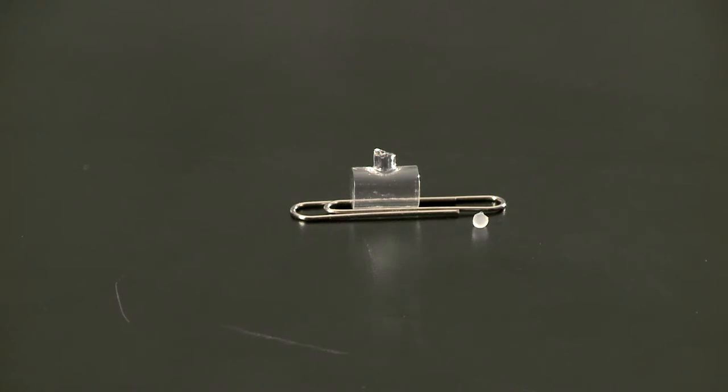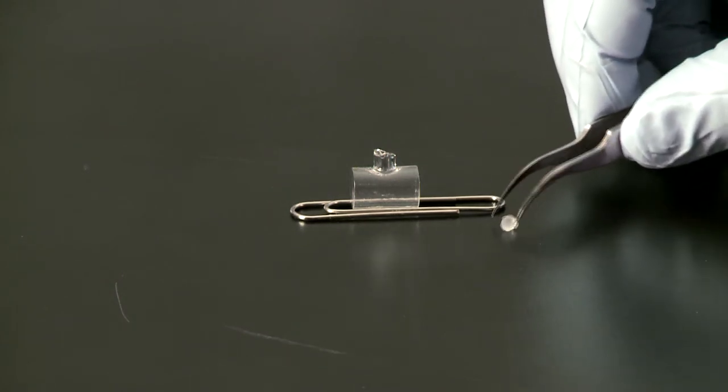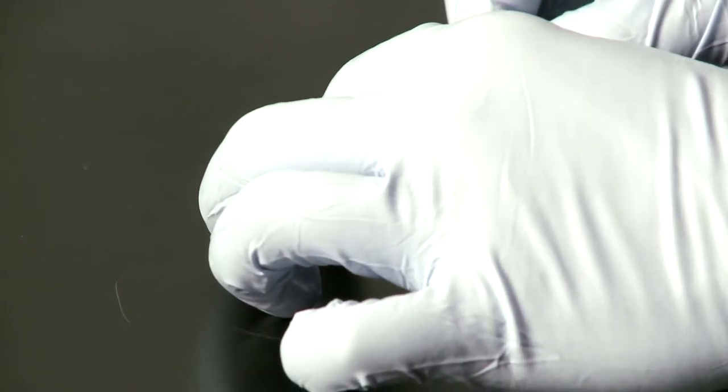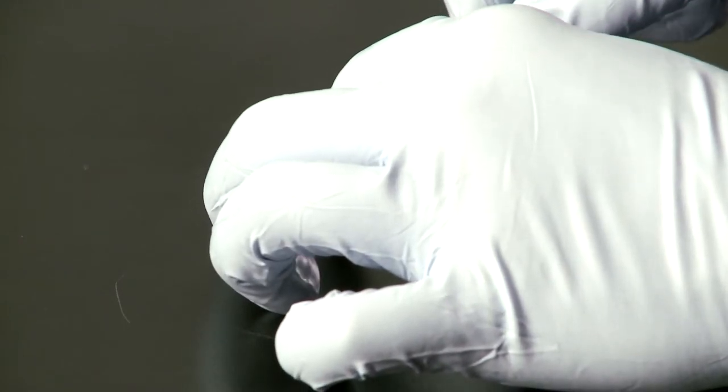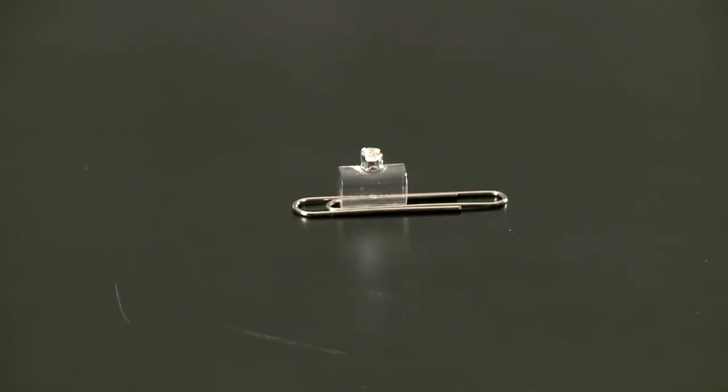The first thing you would do is weigh out your sample and then place the rubber stopper inside the ampule, and then you would re-weigh your sample. Once you have your sample loaded, place the stopper in place and weigh it like that to get the weight of your sample.